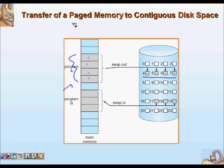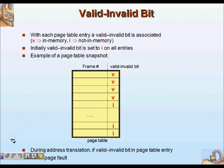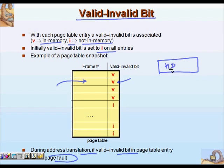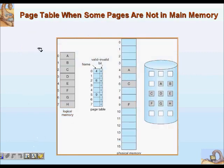We have valid/invalid bits. A valid bit means that page is in memory and can be used. An invalid bit means it's not in memory. Initially, the valid/invalid bit is set to I, meaning not in memory. When you have a page table with frame numbers and valid/invalid bits, during address translation if the valid/invalid bit in the page table entry is I, there will be a page fault.